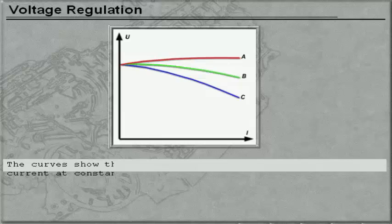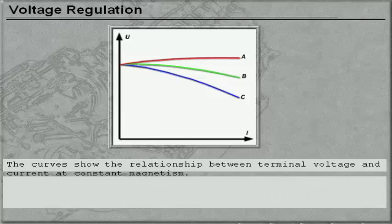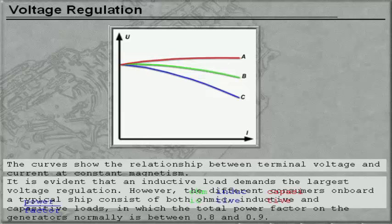The curves show the relationship between terminal voltage and current at constant magnetism. It is evident that an inductive load demands the largest voltage regulation. However, the different consumers on board a typical ship consist of both ohmic, inductive, and capacitive loads, in which the total power factor on the generators is normally between 0.8 and 0.9.